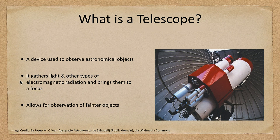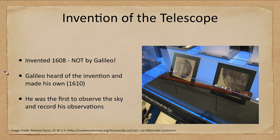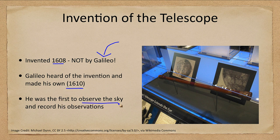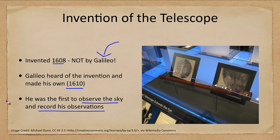Now let's look at the early telescopes. The telescope was actually invented in 1608, and as we mentioned in a previous lecture, it was not invented by Galileo. Galileo did hear of the invention and made his own telescope. He was the first to observe the sky and to record his observations, which is often why he gets credit for the telescope, but he really did not make the invention himself.